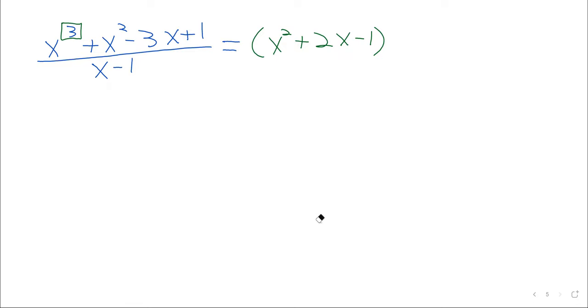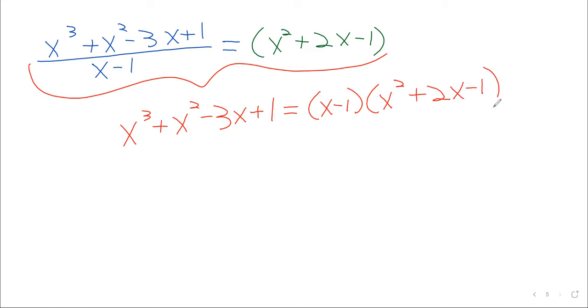So I'm now going to take both sides of this equality. I mean, this is an equality. Something is equal to something else. And I'm going to multiply it by x minus 1. x cubed plus x squared minus 3x plus 1 equals x minus 1 times x squared plus 2x minus 1. So you see what I've done is I've taken that nice root and I've used it as a factoring tool.